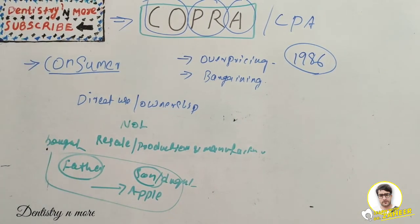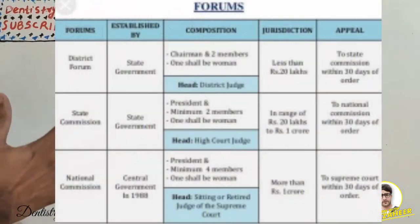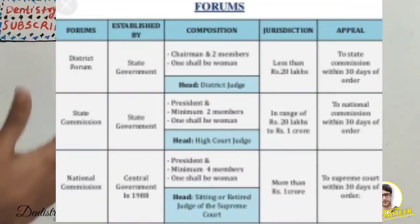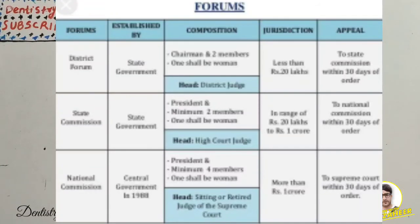This table helps you understand COPRA comprehensively. There are three levels of Consumer Dispute Redressal Agencies: district, state, and national. At the district level, disputes ranging up to 20 lakhs are handled. The district court has a district judge and two other members, of whom at least one must be a woman.